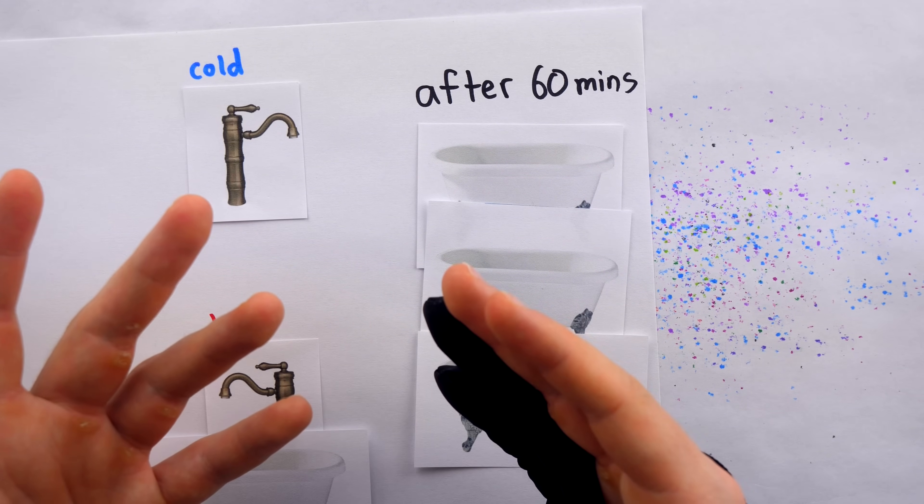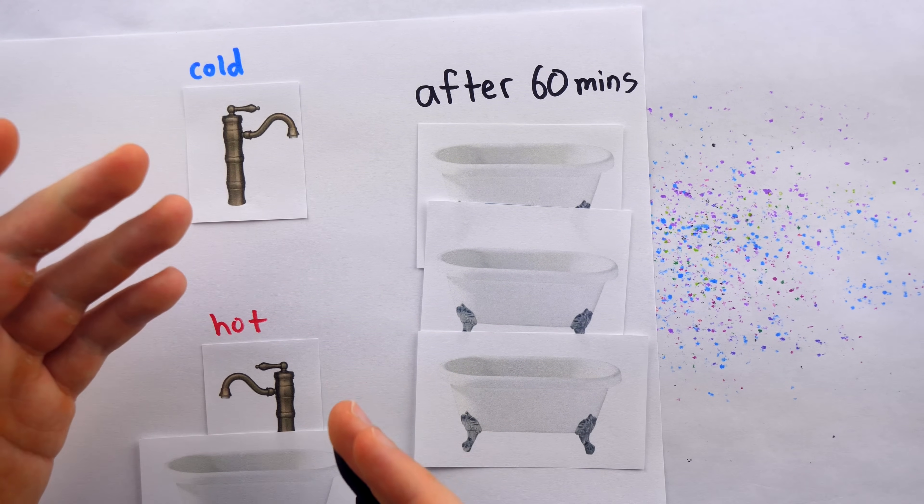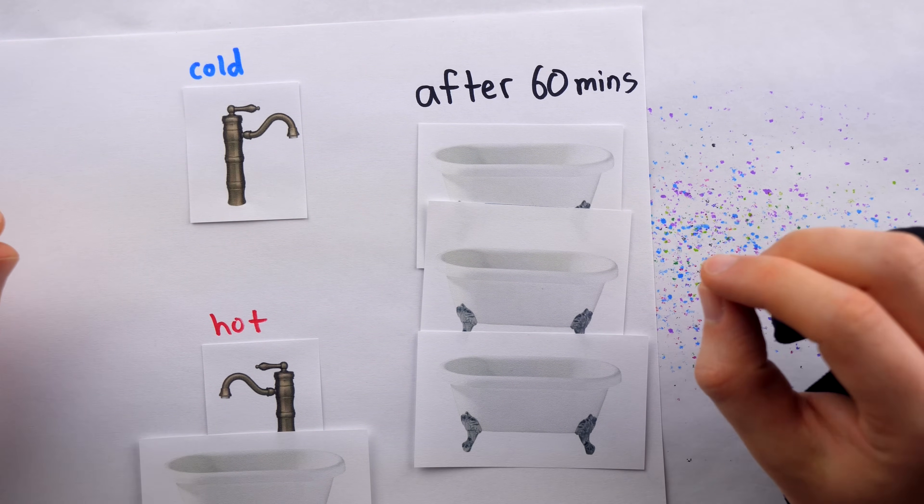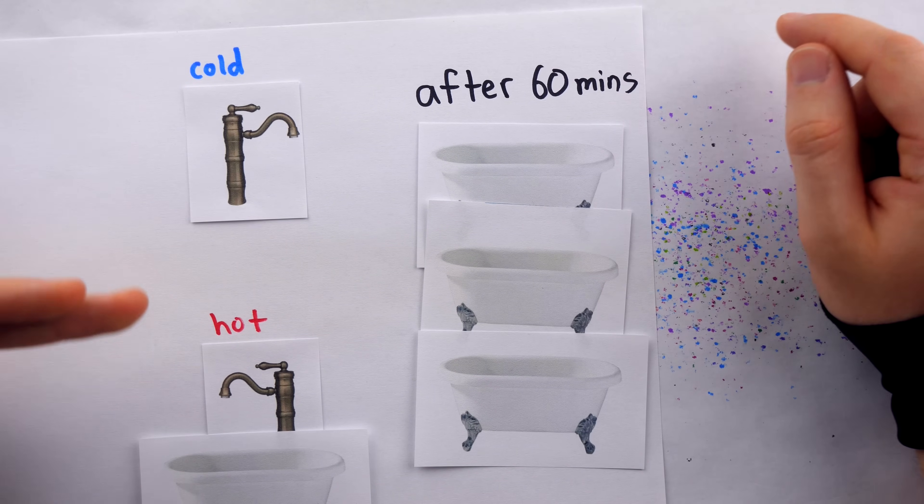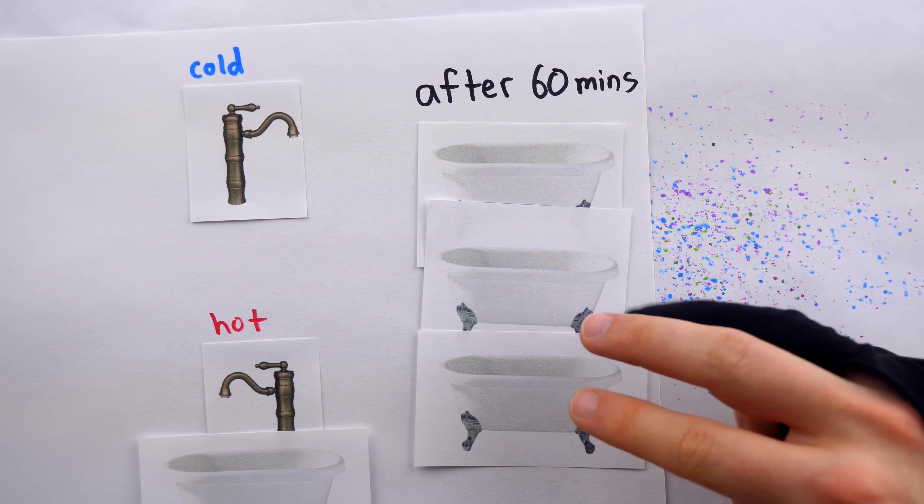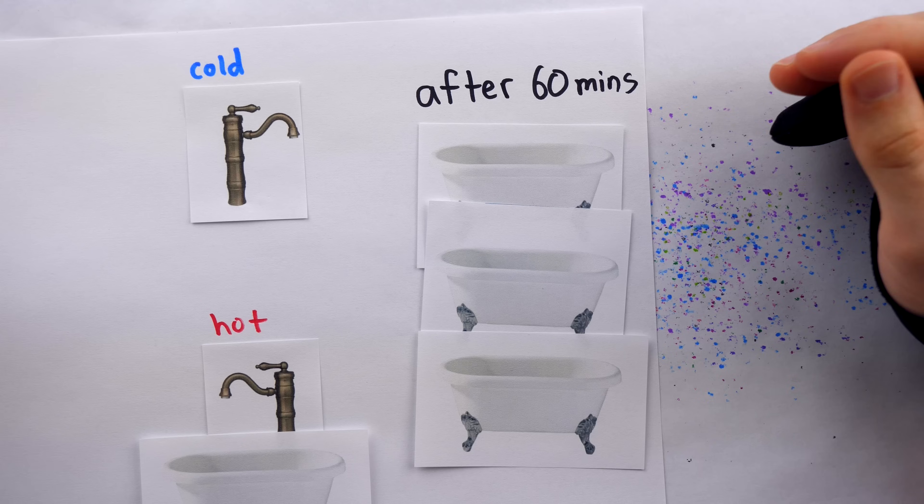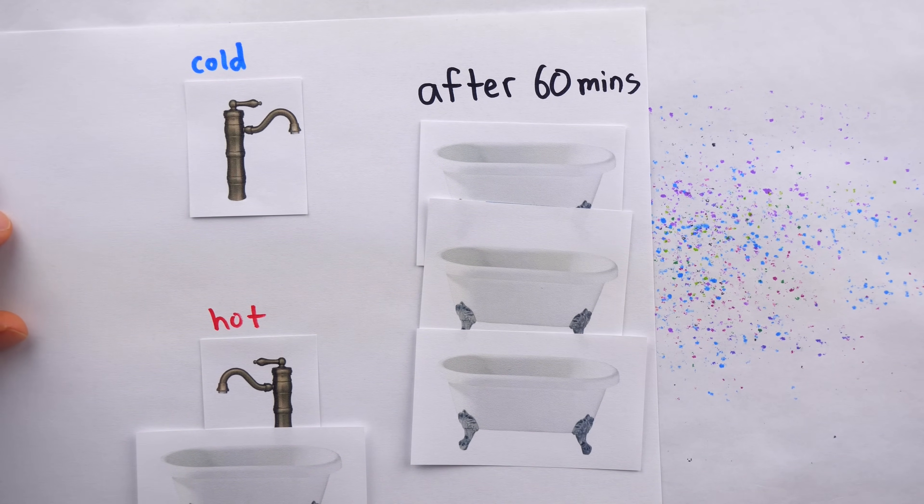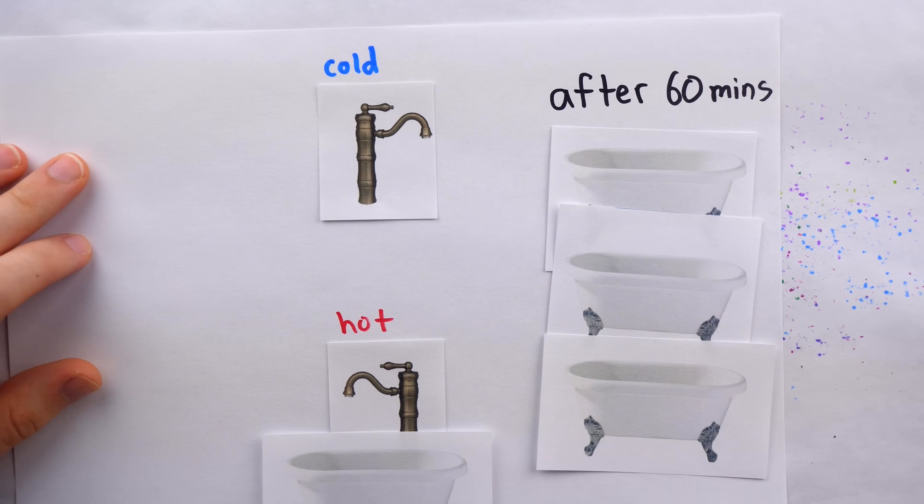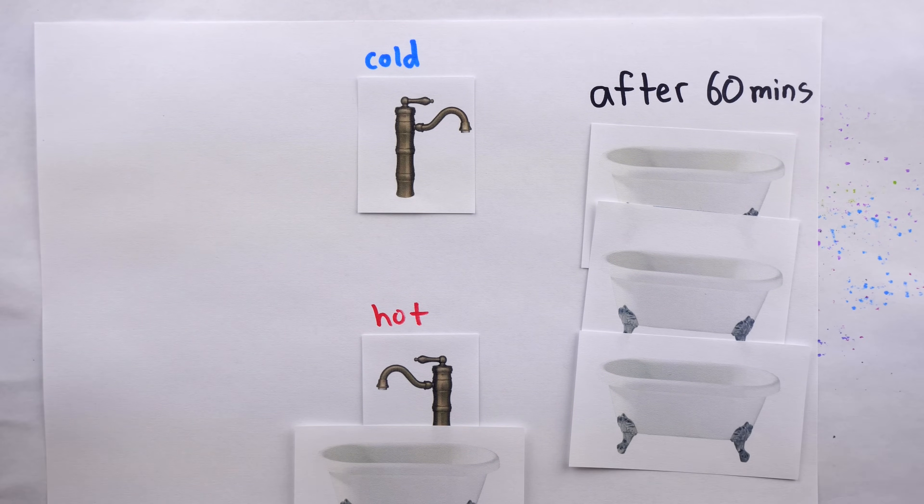So that first solution looked at the flow rates per minute. This, I think, more elegant solution looks at the tub filling rate per hour. Per hour the faucets together fill three tubs, so every 20 minutes they fill one tub. Of course the advantage of looking per hour instead of per minute is that we avoid any messy fractions. Not that that's a big obstacle, but this is still a nice solution.